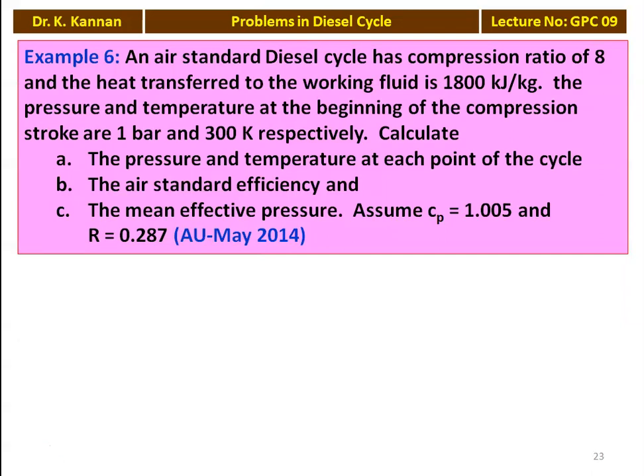This is example number 6 from the May 2014 Question Paper. An air standard Diesel Cycle has a compression ratio of 8. The heat transferred to the working fluid is 1800 kilojoules per kilogram. The pressure and temperature at the beginning of the compression stroke are 1 bar and 300 Kelvin respectively. Calculate the pressure and temperature at each point of the cycle, the air standard efficiency, and the mean effective pressure. Assume Cp equal to 1.005 kilojoules per kilogram Kelvin and R equal to 0.287 kilojoules per kilogram Kelvin.